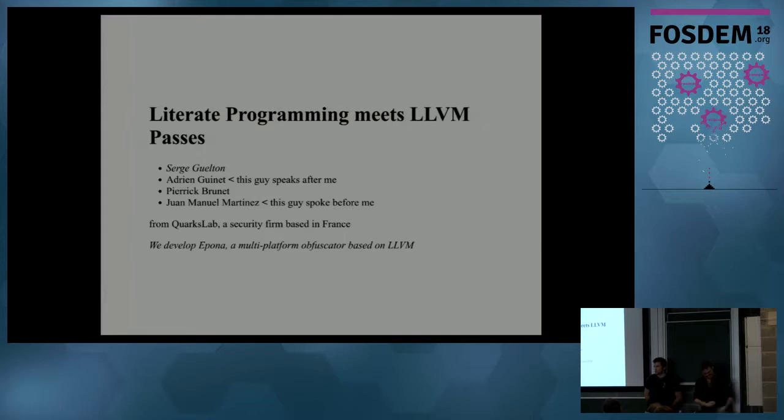So as part of our job, we develop an LLVM Obfuscator called Epona and we have one problem. We have users and users want documentation, but we are developers and we don't want to write documentation, and furthermore, we don't want to maintain our documentation. That's the topic of this talk: how to do the minimal stuff so that users have their documentation and we don't write it or maintain it too much.